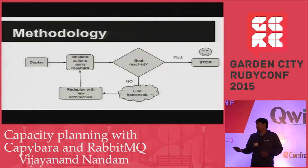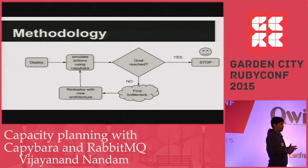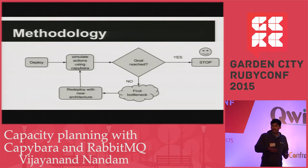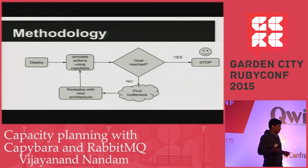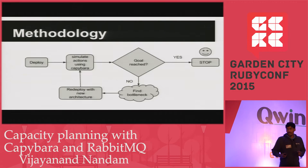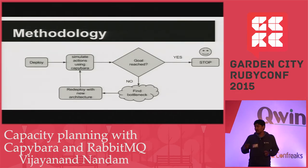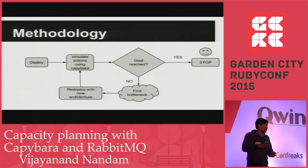This is the methodology I'm going to follow. First, I take an initial deployment architecture. Then I simulate the actions of the users using Capybara. Then I calculate the number of concurrent users this architecture is supporting.